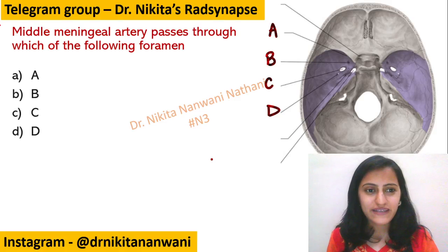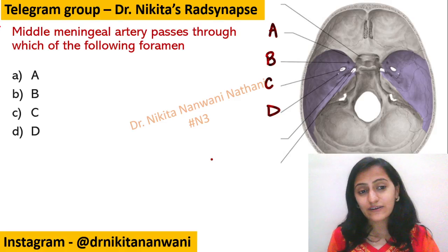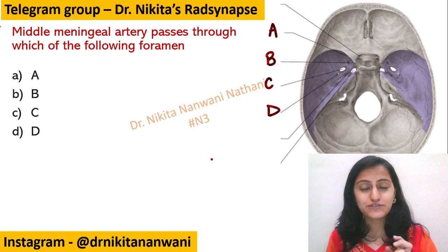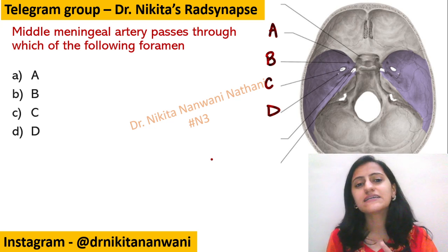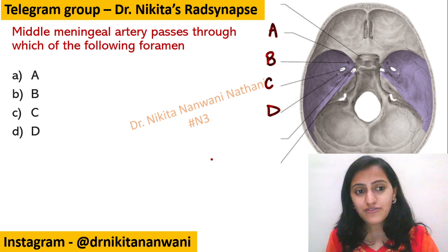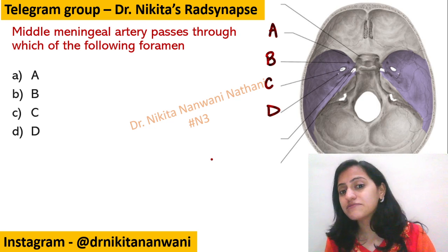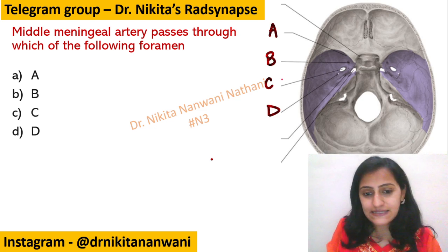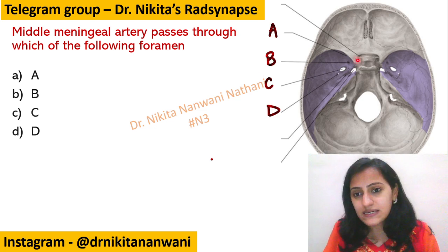Hello everyone, this is Dr. Nikita here and here we have mnemonic of the day. The question is related to the foramen of the skull, a very important must-know topic. Middle meningeal artery passes through which of the following labeled foramen? Is it A, is it B, is it C, or is it D?